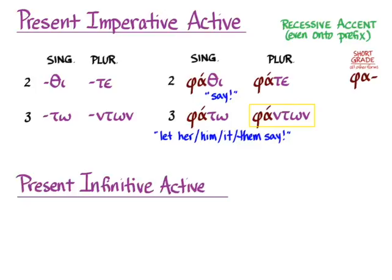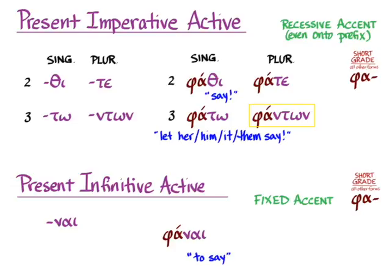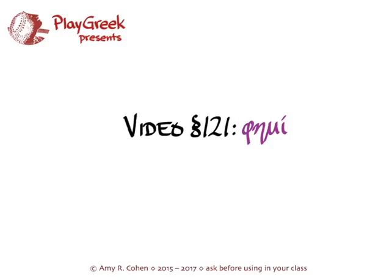That leaves the infinitive active. And again, we're going to use the ending that we learned for mi verbs, which is going to have fixed accent, and it's going to use the short grade stem, and we get φάναι, and that means to say. So here you have all of the paradigm for φημί, which only appears in the active. And so those are all the irregular forms that you need to learn. Of course, you still need to be able to form the future and the aorist as usual, but only in the active.